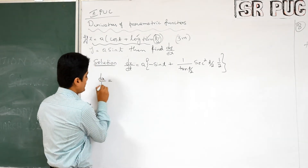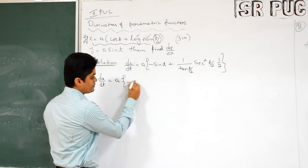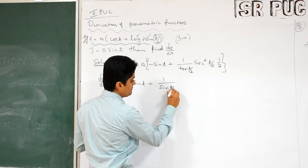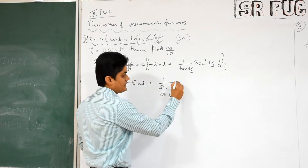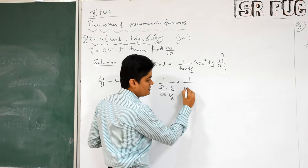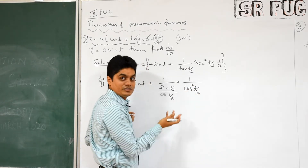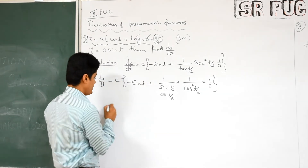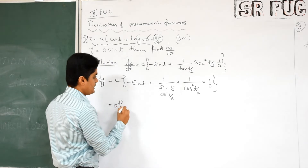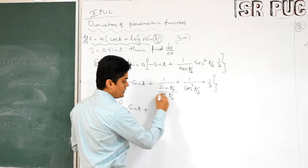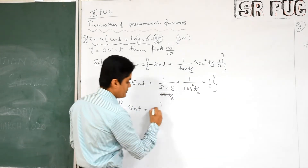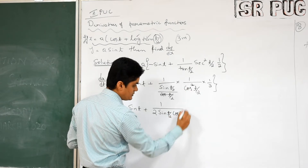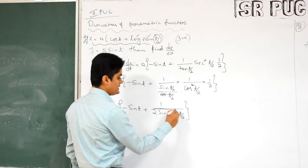Now you have to rearrange it properly — you cannot use it as is, it should be simplified. Tan(t/2) can be written as sin(t/2) divided by cos(t/2). Sec²(t/2) can be written as 1 over cos²(t/2). Keep the 1/2 as it is. Out of these factors, one cancels, giving: minus sin(t) plus 1 over [2·sin(t/2)·cos(t/2)].